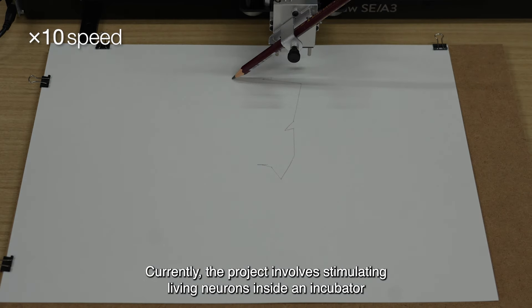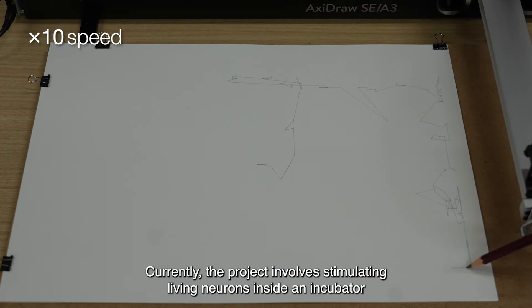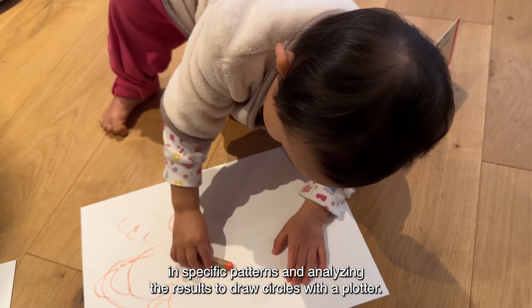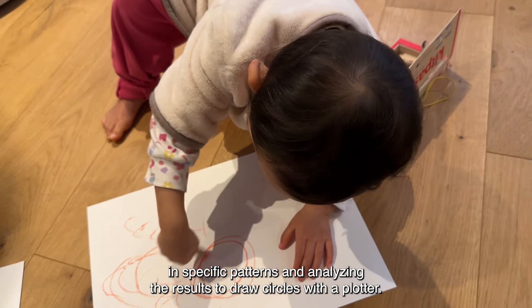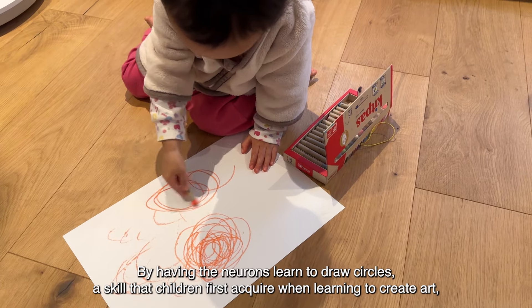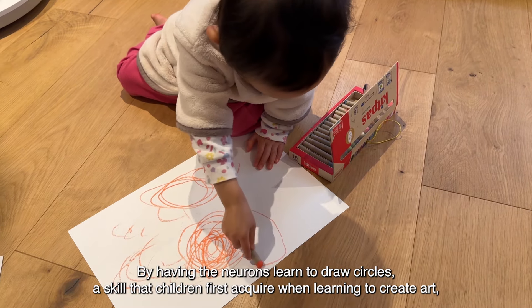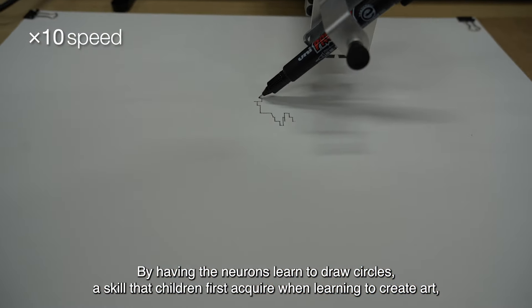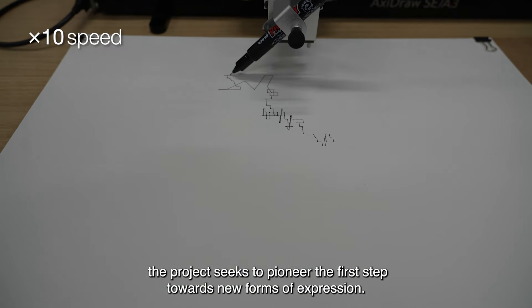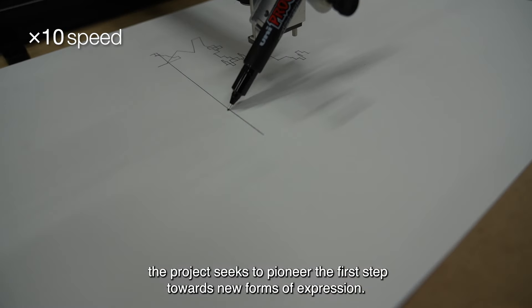Currently, the project involves stimulating living neurons inside an incubator in specific patterns and analyzing the results to draw circles with a plotter. By having the neurons learn to draw circles, a skill that children first acquire when learning to create art, the project seeks to pioneer the first step towards new forms of expression.